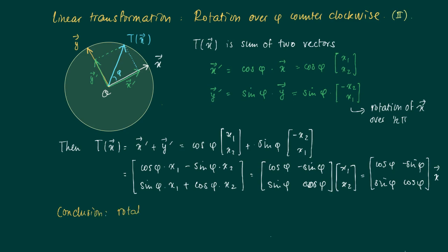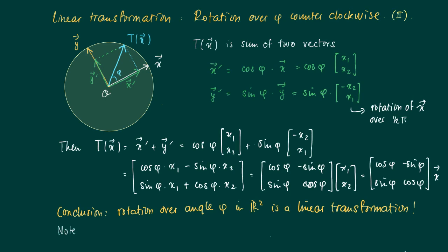We may conclude that the rotation over an angle φ counterclockwise actually defines a linear transformation in R², from R² to R², as it can be represented by a matrix-vector product. We will call this matrix the rotation matrix, denoted R_φ — R for rotation, over the angle φ counterclockwise.